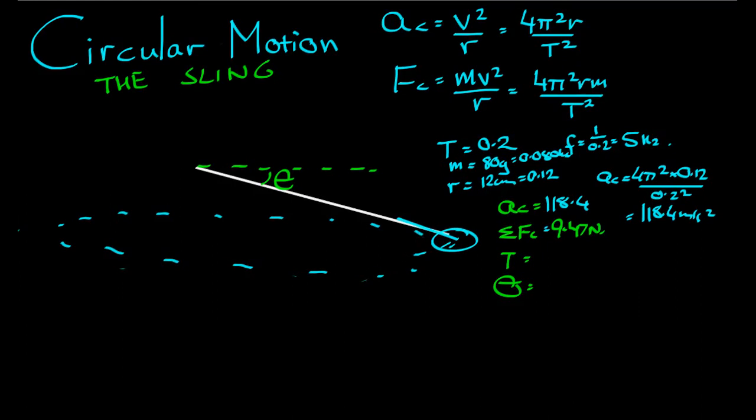Let's do a force diagram now. We have the weight force. 0.080 kilograms is 0.8 newtons, directly down like that. We also have the tension force in the string there, acting in the direction of the string, like so. This stone is not accelerating in the vertical plane. It's not moving down. It's not moving up. It's just moving side to side, around in that plane there.